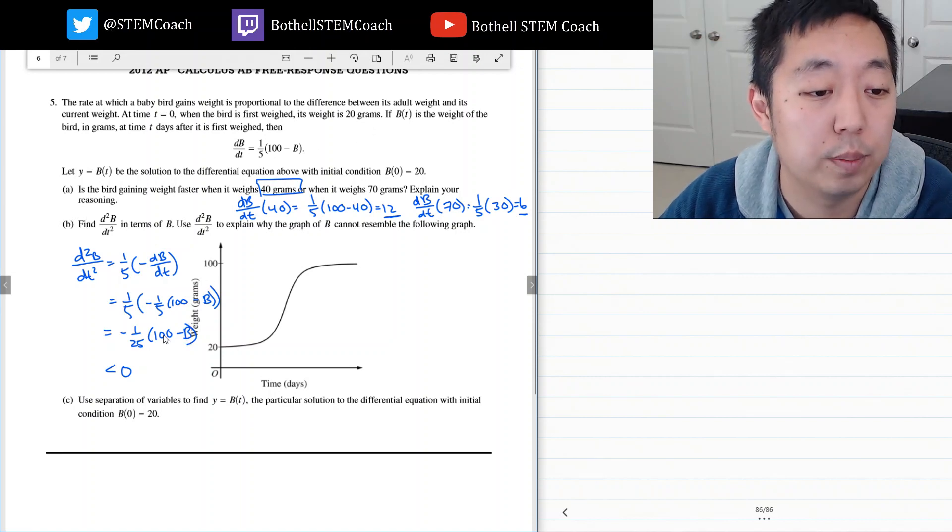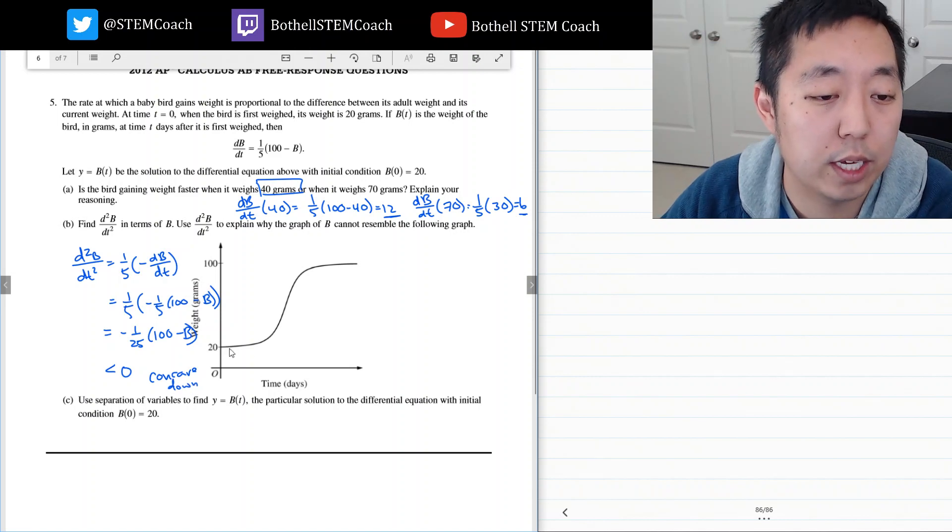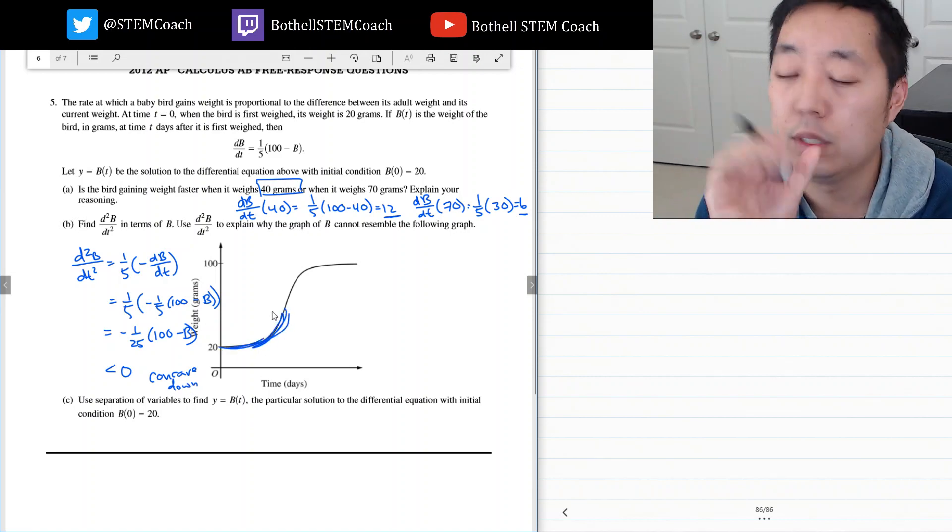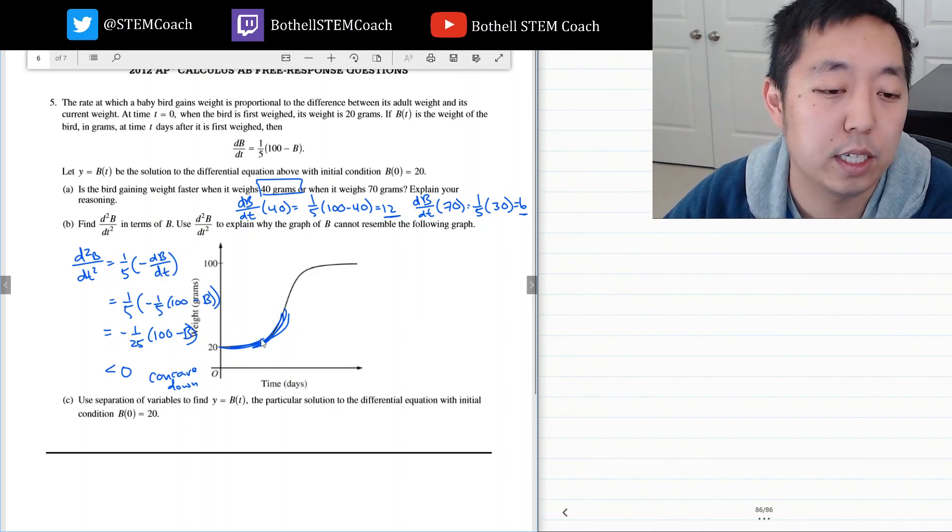So it's always less than 0, which means it should be concave down the whole way, especially at the beginning. But you see this is concave up right here, it's like a bowl up. So because it's concave up there, that's the explanation. It's really that the second derivative is negative, which is concave down, so it should look more like this the whole way.